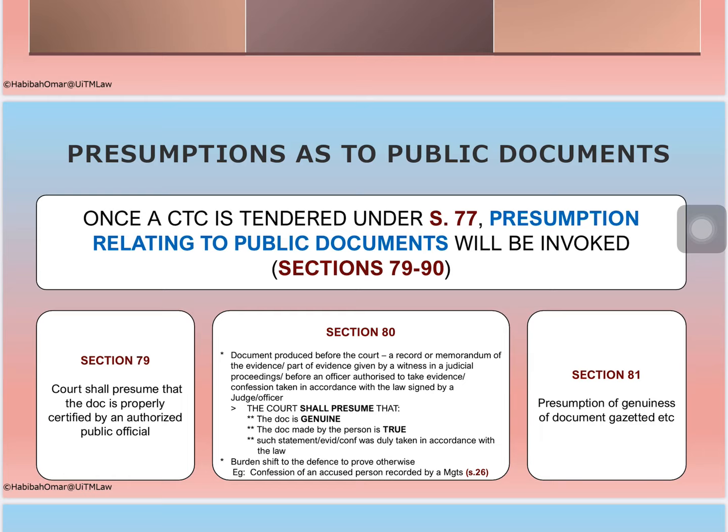Once a public document is produced as a certified true copy under section 76, the content is deemed to be proven. Automatically, there will be a presumption that the document is genuine and true. Under section 77, once a certified true copy is tendered, the presumption relating to public documents is invoked. The court shall presume that the document is properly certified by an authorized public official — it is deemed to be genuine, and the content is deemed to be true.